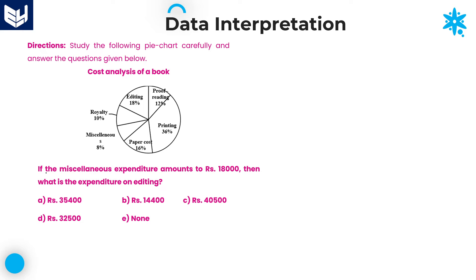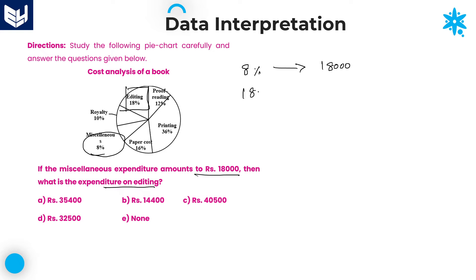Let's move on to the third question. If the miscellaneous expenditure amounts to 18,000, and miscellaneous is 8%, then 8% equals 18,000. The question asks: what is the expenditure on editing? Editing is 18%. So given 8% equals 18,000, what is 18%? That is the editing cost.